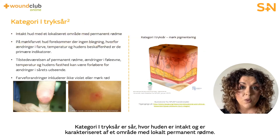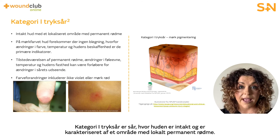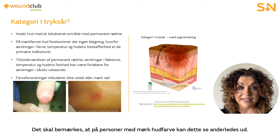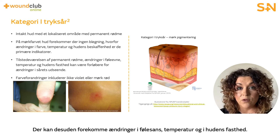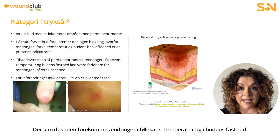Category one pressure ulcers are those with the skin remaining intact. They are characterised by an area of local, non-blanching erythema. It's worth noting that on darkly pigmented skin, this may appear differently. There may also be changes in sensation, temperature, or the firmness of the skin.